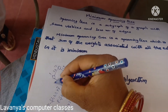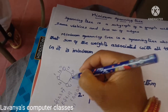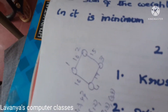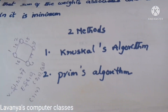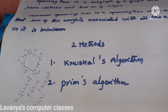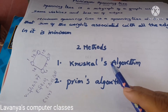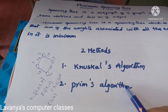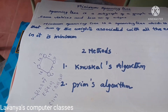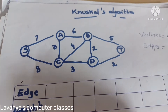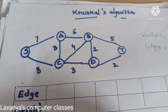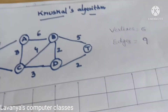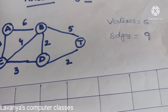If any edge has a number — some weight — that graph is called a weighted graph. For example, the edge (1,2) has weight 10. We are finding which one is the minimum spanning tree. For that we have two methods: one is Kruskal's algorithm, the second one is Prim's algorithm. Now we will explain Kruskal's algorithm.